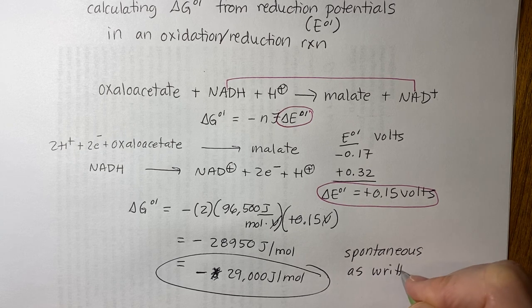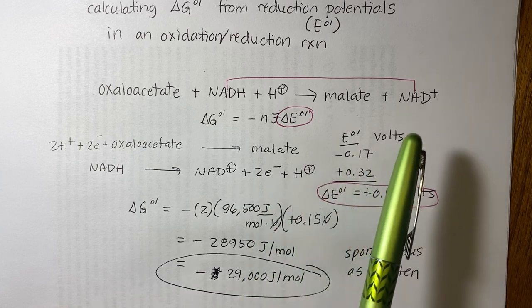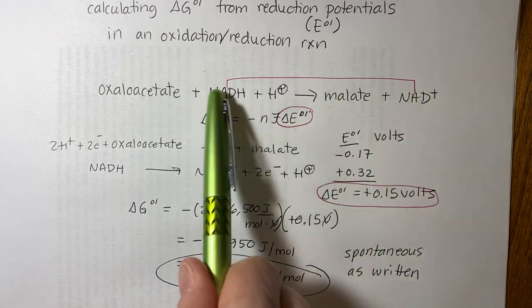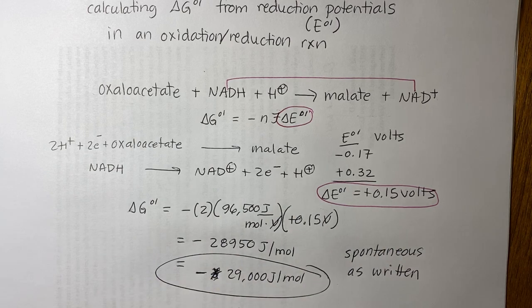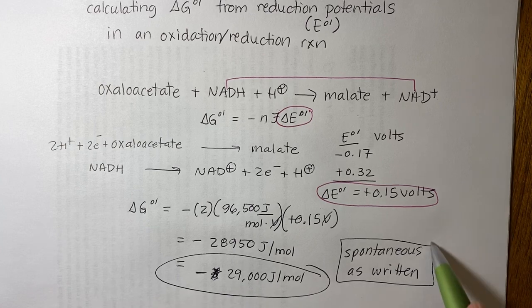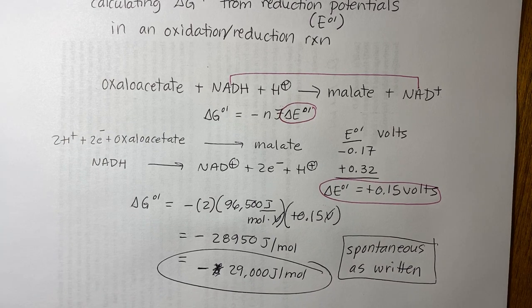You could also write the reaction in the reverse, the whole thing, malate plus NAD plus going to this side. And if you did the calculation, you'd get the same answer, but it would be positive. So in that case, it would be non-spontaneous. As written, our delta G is negative, so it's spontaneous. All right, if you have any questions on that, just let me know.